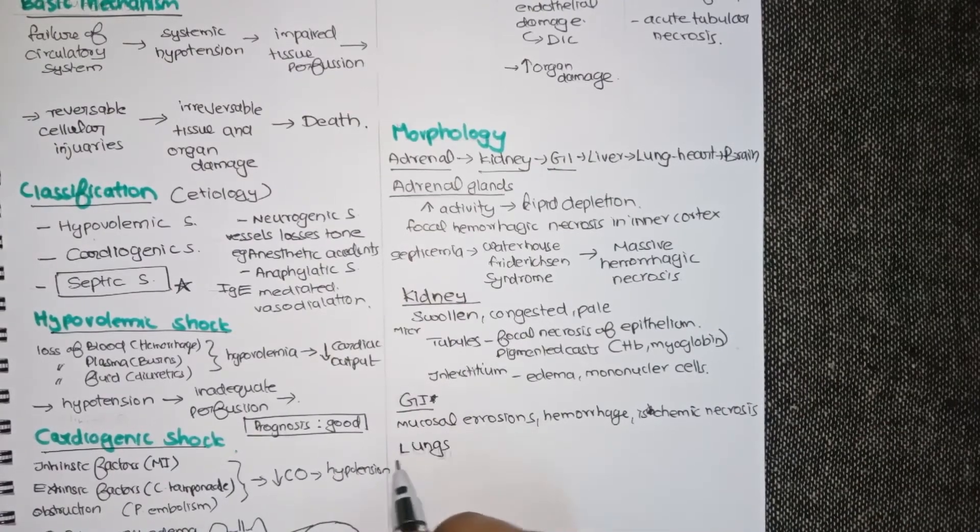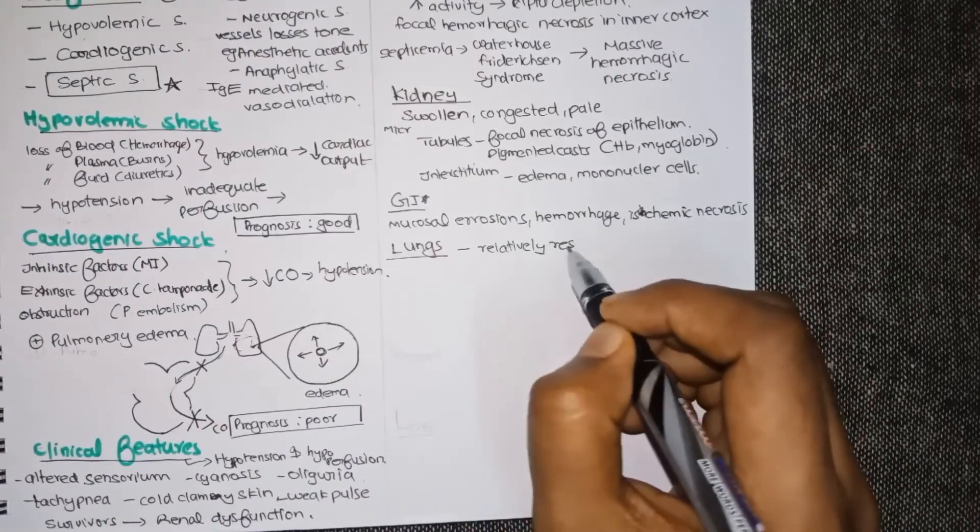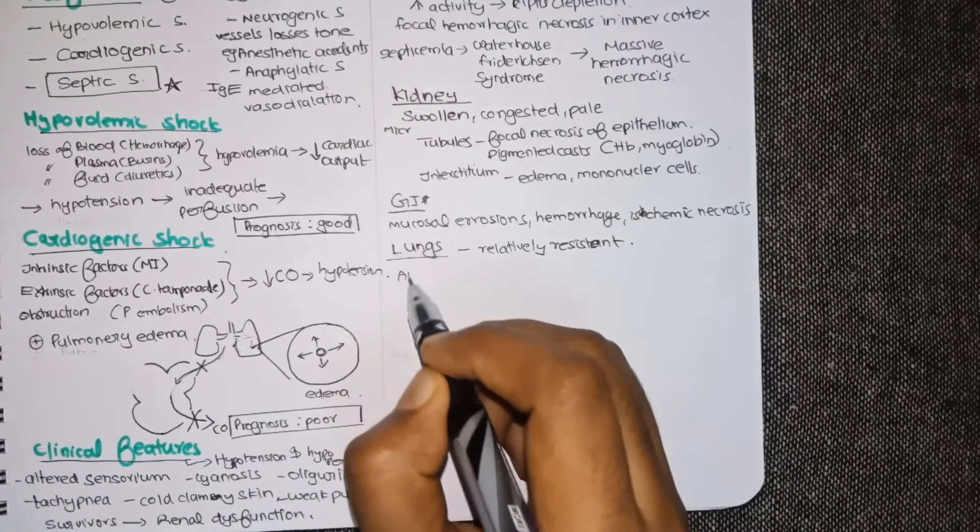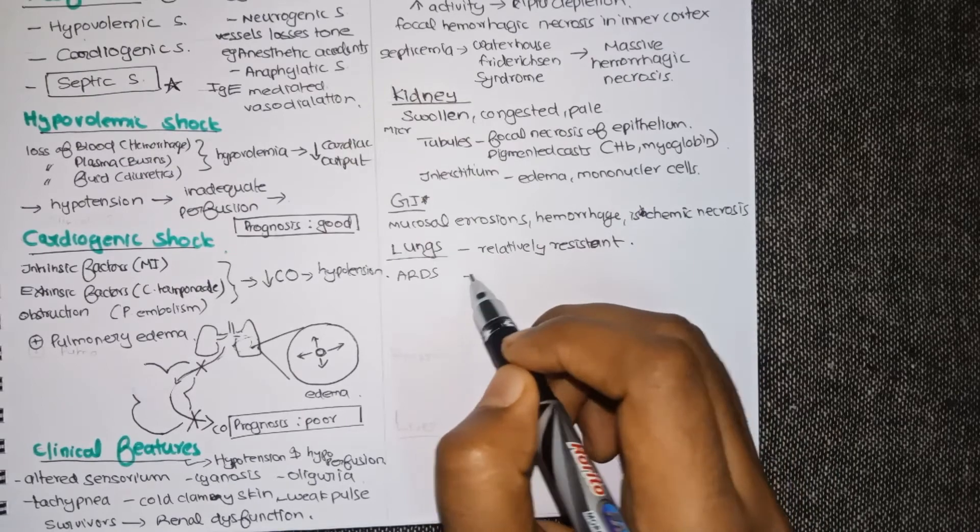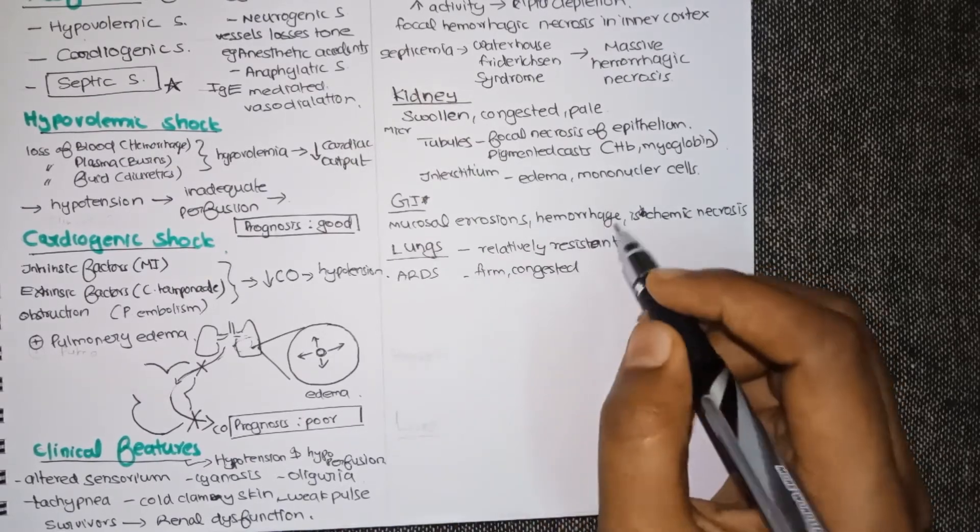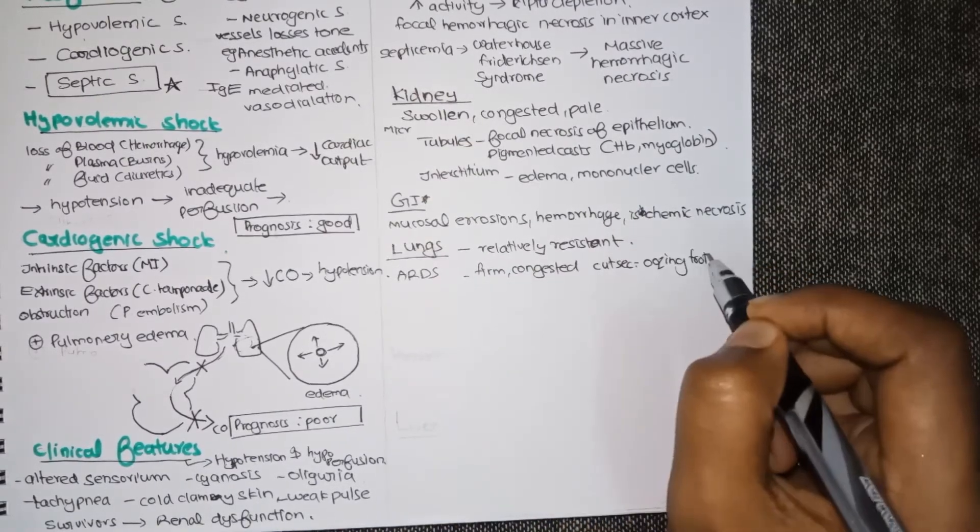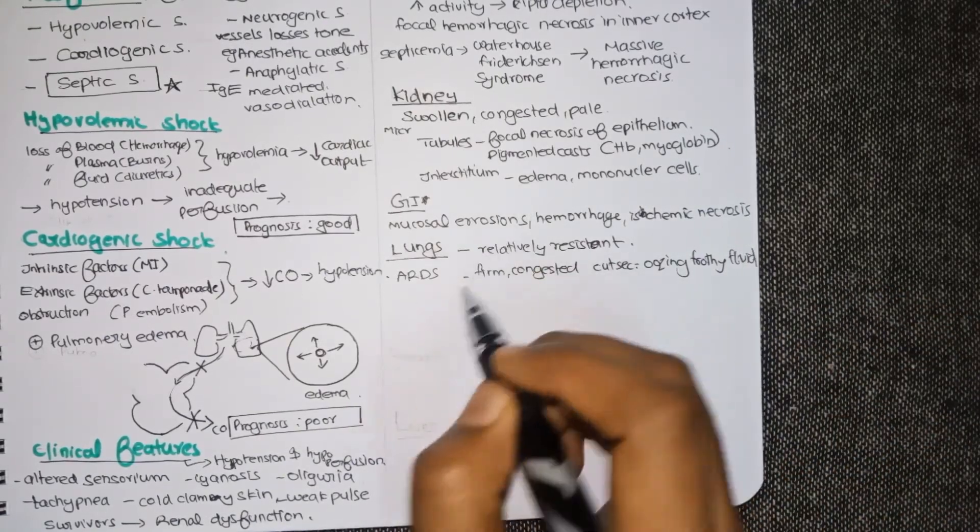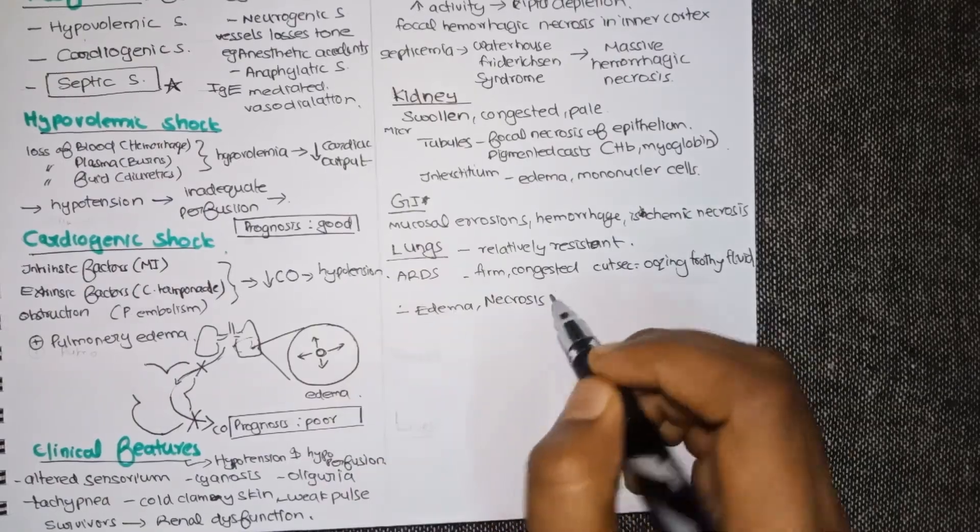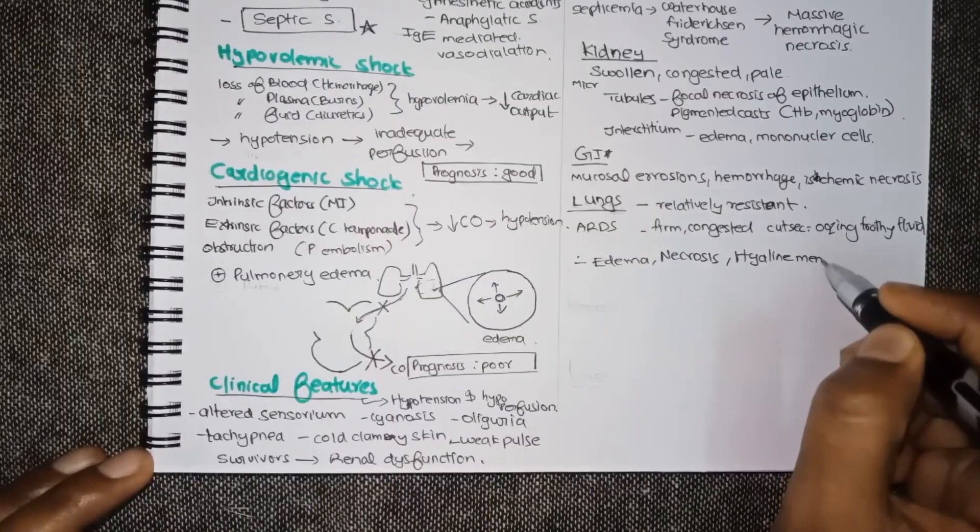Lungs are usually resistant to shock. However, in severe cases there will be acute respiratory distress syndrome. On gross, they will be firm and congested. And on cut section, they show frothy oozing fluid. Edema, necrosis and hyaline membrane formation is seen.